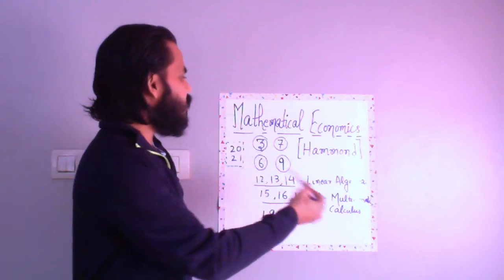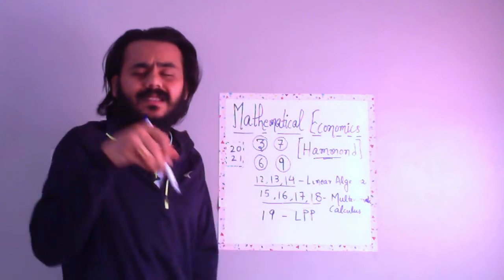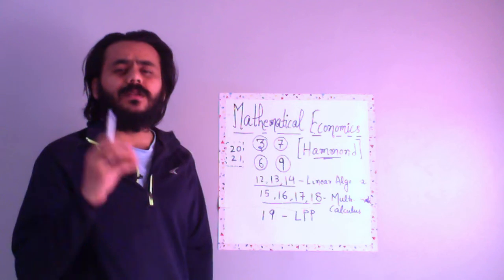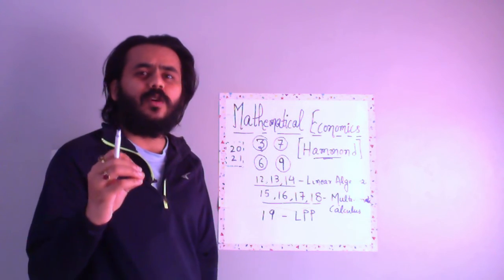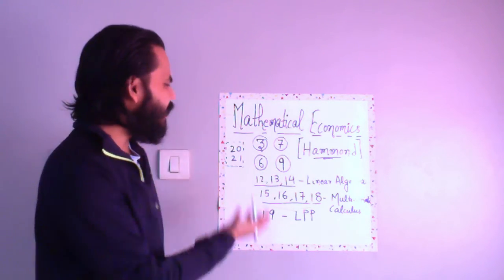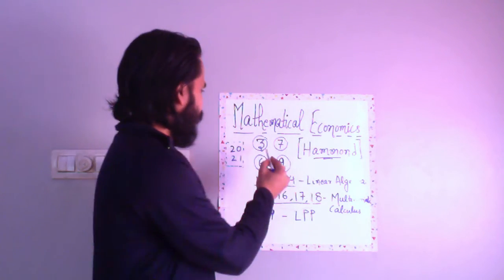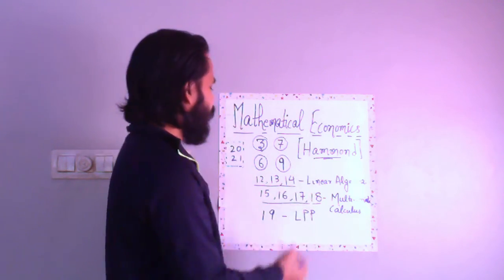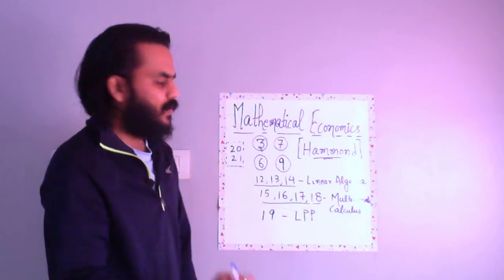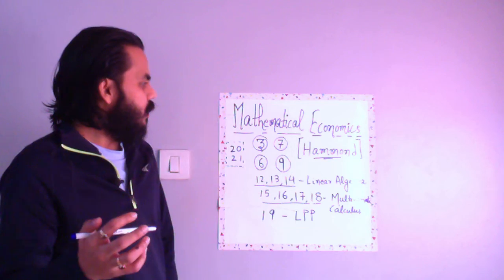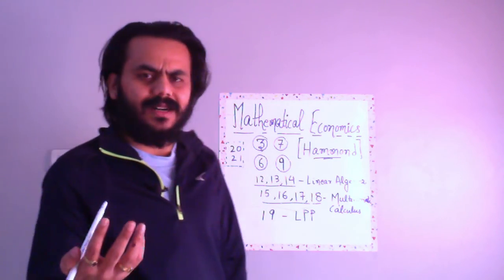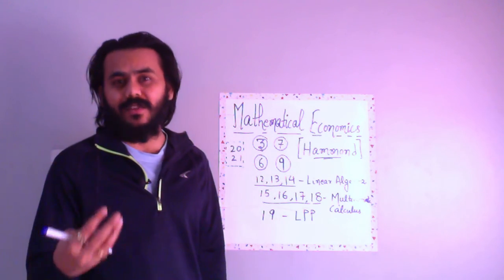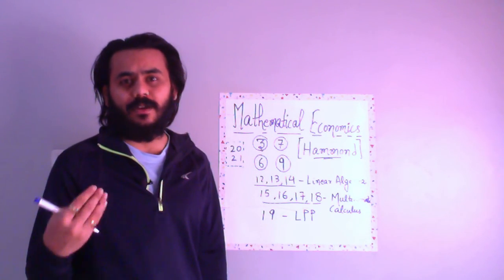These are the chapters from Hammond - the link is in the description box - which you need to read for the mathematical economics part of your entrance examination preparation. That's 12 core chapters and 2 optional chapters. I hope this is useful for people preparing for economics entrance examinations. I will be adding more videos on maths, economics and statistics.